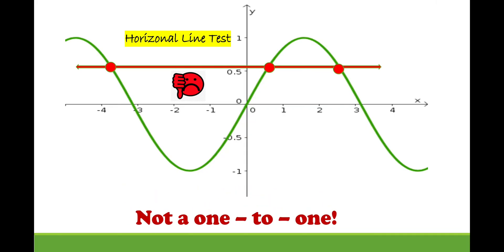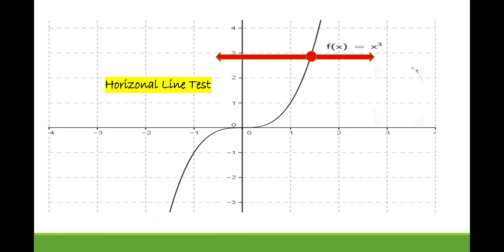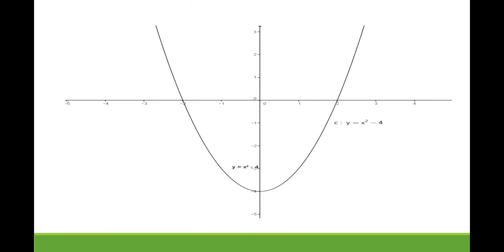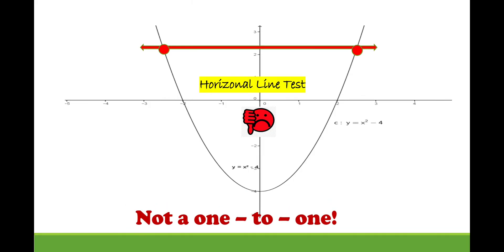Another example: using a horizontal line, it intersects at exactly one point, so it passes the horizontal line test — it is a one-to-one function. Another example: using a horizontal line, it intersects at two points, so it does not pass the horizontal line test. Therefore, it is not a one-to-one function.